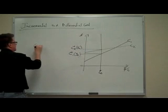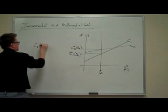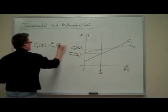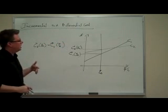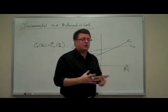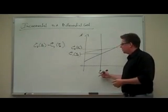You're just looking at the difference between the two costs at the same volume level. Eventually we'll be looking at the cheapest way of actually supplying a certain quantity of output.